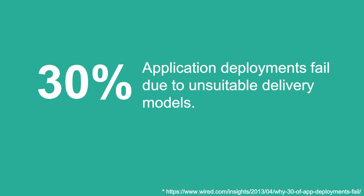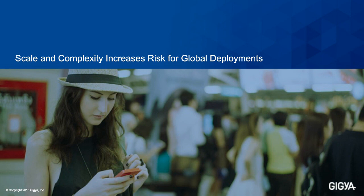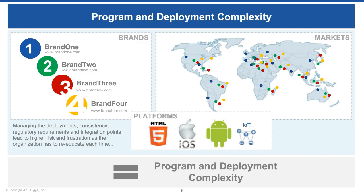Let's start by thinking about what makes a global deployment complex. We at GigEar work with many different types of customers — from single sites with high-scale requirements, to many smaller sites operating across different brands, different markets, and different platforms. These are a real multiplier of complexity when managing lots of digital properties across web, mobile, and IoT deployments.